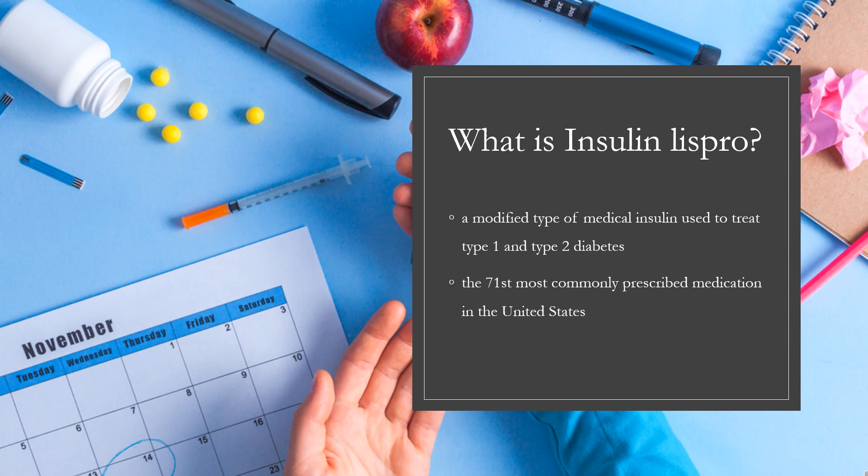What is Insulin Lispro? Insulin Lispro, sold under the brand name Humalog among others, is a modified type of medical insulin used to treat type 1 and type 2 diabetes. It is used by injection under the skin or within an insulin pump. Onset of effects typically occurs within 30 minutes and lasts about 5 hours. Insulin Lispro was first approved for use in the United States in 1996. It is a manufactured form of human insulin where an amino acid has been switched.